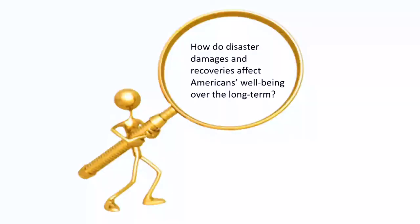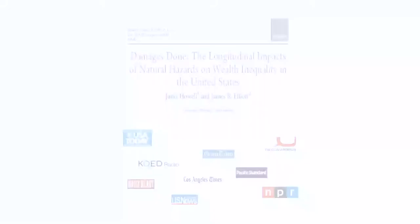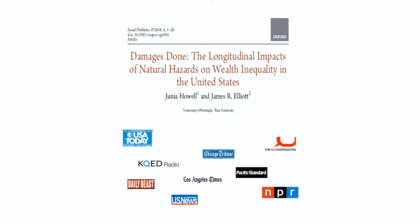The question my student and I were asking was: how do disaster damages and recoveries affect Americans' well-being over the long term? This seemed a basic question, but when we went looking for answers, there weren't any. The investment intellectually into that question has been disaster-centric — people do case studies of Katrina or Harvey or the 1906 San Francisco earthquake, so you get snapshots but don't really know what's happening over time. So what we wanted to do was flip that perspective around.